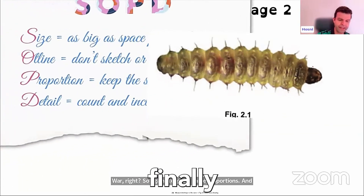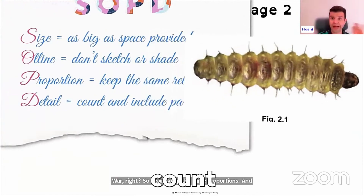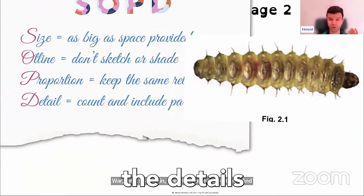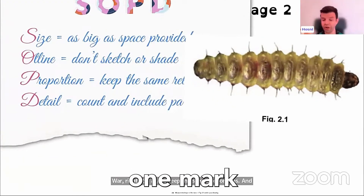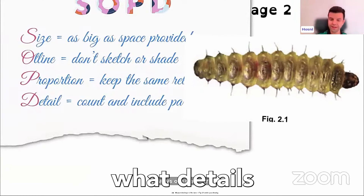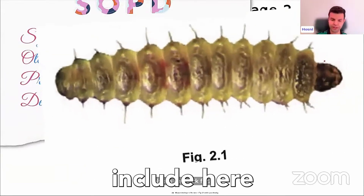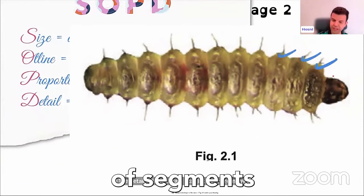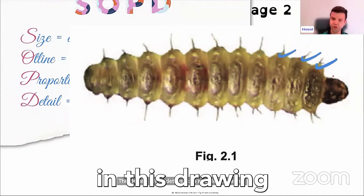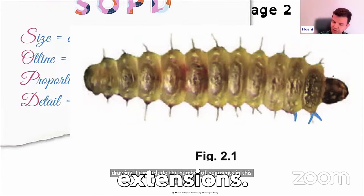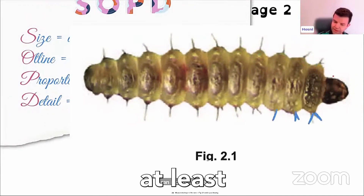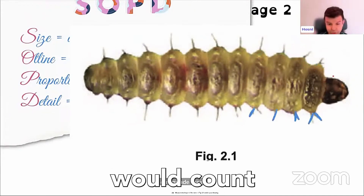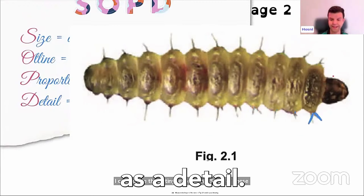And then finally, count — the details matter. There's always one mark for the details. What details can I include in my drawing? I can include the number of segments, and I can include those tiny extensions. All of these would count as a detail.